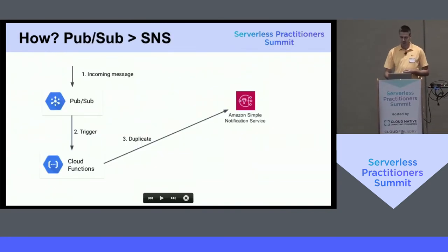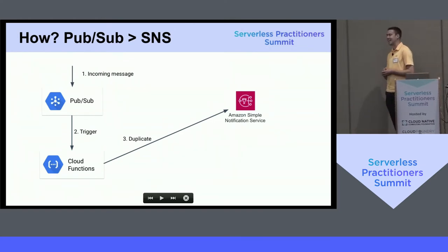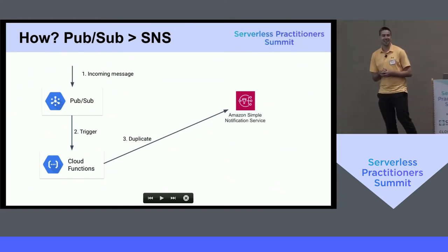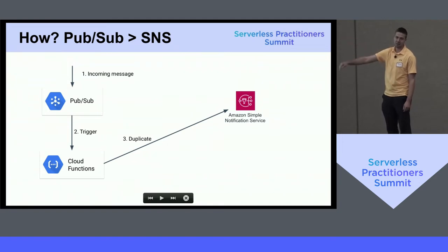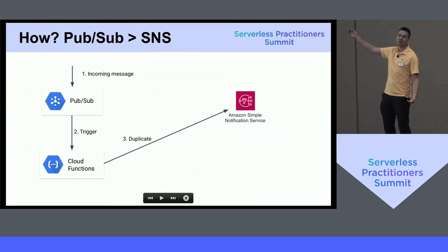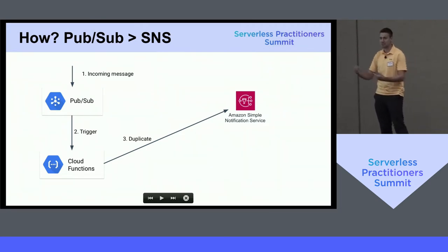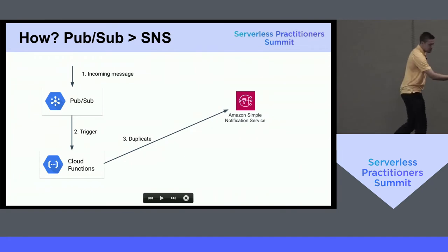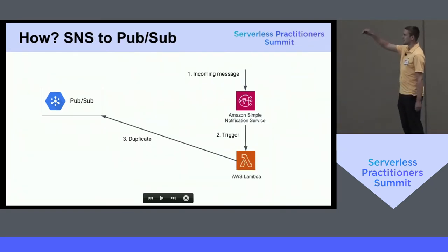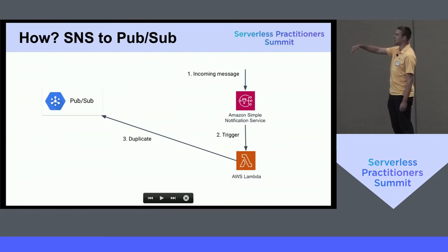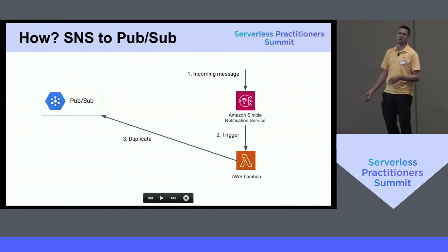I'll quickly show how it is done from the architecture side. If you have an incoming message to PubSub, it triggers a Cloud Function. That Cloud Function just duplicates the message and sends it to SNS, so an application subscribed to SNS can also receive it. The other direction is the same: a message comes in to SNS, a Lambda function gets triggered, and that function duplicates the same message to PubSub.